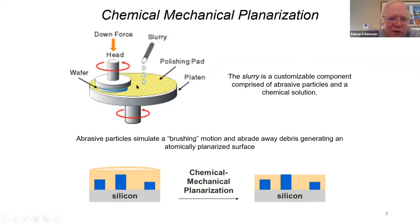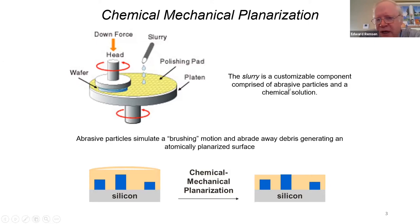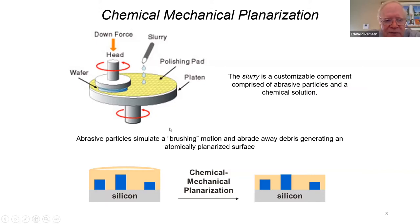This is a typical representation of a chemical mechanical planarization apparatus. A silicon wafer is held in place on a rotating head, which is being pressed mechanically with a given downforce against a polymeric pad, usually made of some polyurethane material, which is also being rotated. Onto that pad is being dripped a slurry — an abrasive slurry that is a mixture of nano-sized particles and some chemical additive that provides chemical action, while the abrasive particles provide polishing or planarization to atomic flatness, hence the name chemical mechanical planarization.